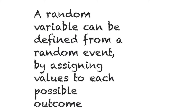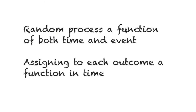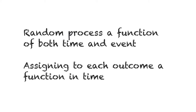For better understanding, let's compare a random variable with a random process. A random variable can be defined from a random event by assigning values to each possible outcome. An event is a subset of the sample space. The key difference when we come to a random process is that a random process is a function of both time and event — you are assigning to each outcome a function in time.